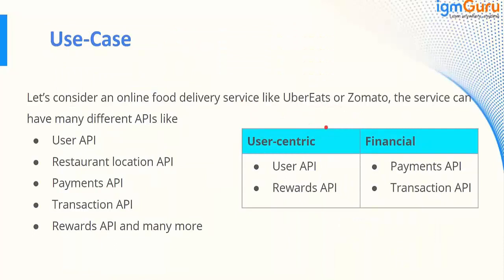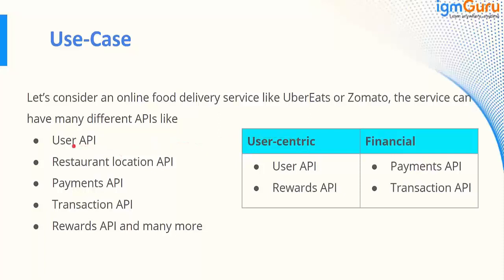This is the first use case. Let's say you have Uber Eats. These guys have exposed APIs: user API, restaurant location API, payment API, and transaction API. Now there are clients who want to build a solution using these APIs. They are looking for which APIs are user-centric and which are financial APIs. With only five APIs you can figure it out by naming, but what if you have 25 or 30 APIs? Then it's a problem and it will take time.